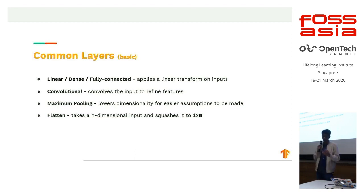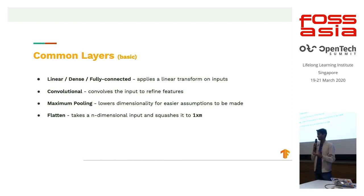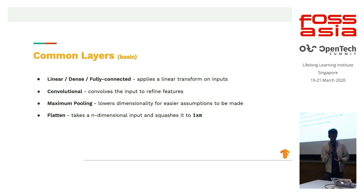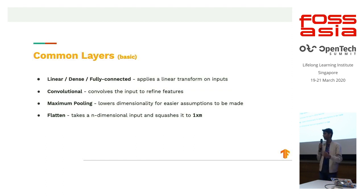Max pooling usually accompanies convolutional layers. It lowers the dimensionality, making it easier for the model to learn. When you have a convolutional layer followed by a max pool layer, it lowers the number of parameters in the network — the weights and biases in the individual neurons — making it much lighter. Applying max pooling immediately after a convolution brings down the parameter count, making the model faster in production.